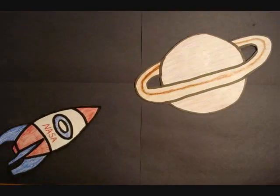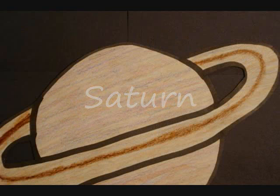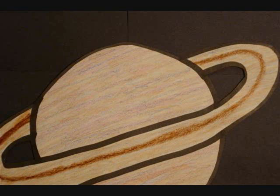Our next stop is Saturn. Saturn is the 6th planet from the sun and is also gaseous, but also has rings made of rock and ice. Saturn has 18 moons.